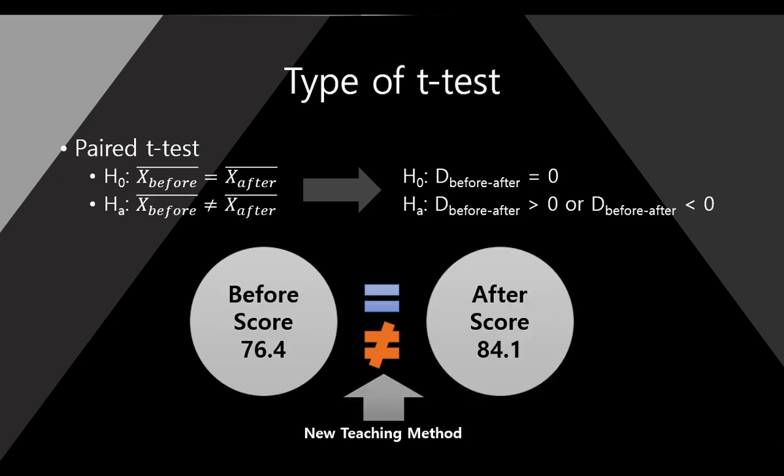The third one is a paired T-Test. The paired means we have the same sample, but it is tested before and after. For example, we want to know the validity of a new teaching method. So before using this new teaching method, we take an exam for our students—that is a before score.